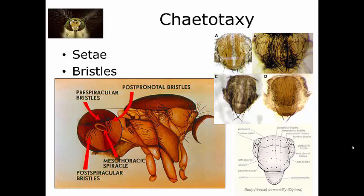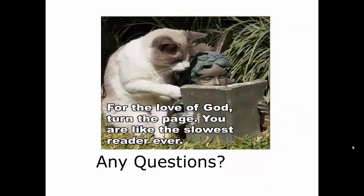When identifying species, you'll find a chaetotaxic map of where the hairs are located — shown here on the bottom right, this is a map of the thorax of a blowfly indicating where all the different hairs are found. In most keys you'll find the chaetal map. You'll get to know it, and love or hate it, but it's the easiest way to identify flies. That brings us to the end of this basic introduction to the Diptera.